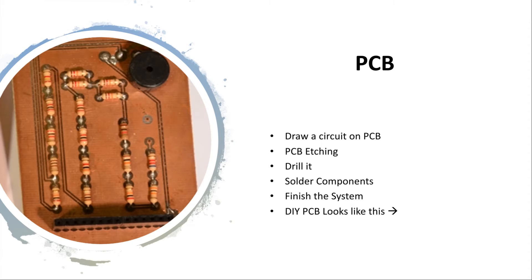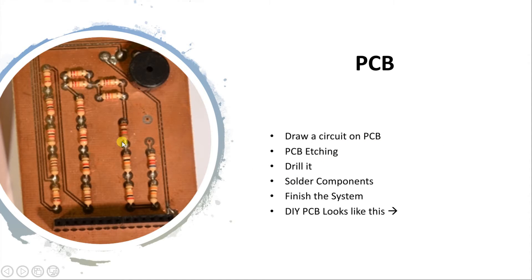Let's look at what the process of creating a PCB involves. The first step is drawing the PCB artwork. The second step is etching the PCB in a solution — we create a circuit layout on the PCB and then put it through an etching process, in which all the unwanted copper on the board is removed through a chemical process. Usually we use FeCl3 solution to do that. After etching, we drill the PCB according to the required holes, then solder the components and finish the system.